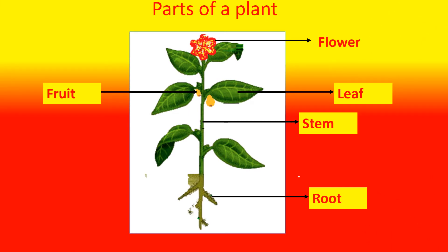Parts of a plant. Children, turn to page 86. Just as a body has different parts that help us perform different activities, in the same way a plant has many different parts. Let us look at this picture. The picture shows the different parts of the plant: root, fruit, leaf, flower and stem.